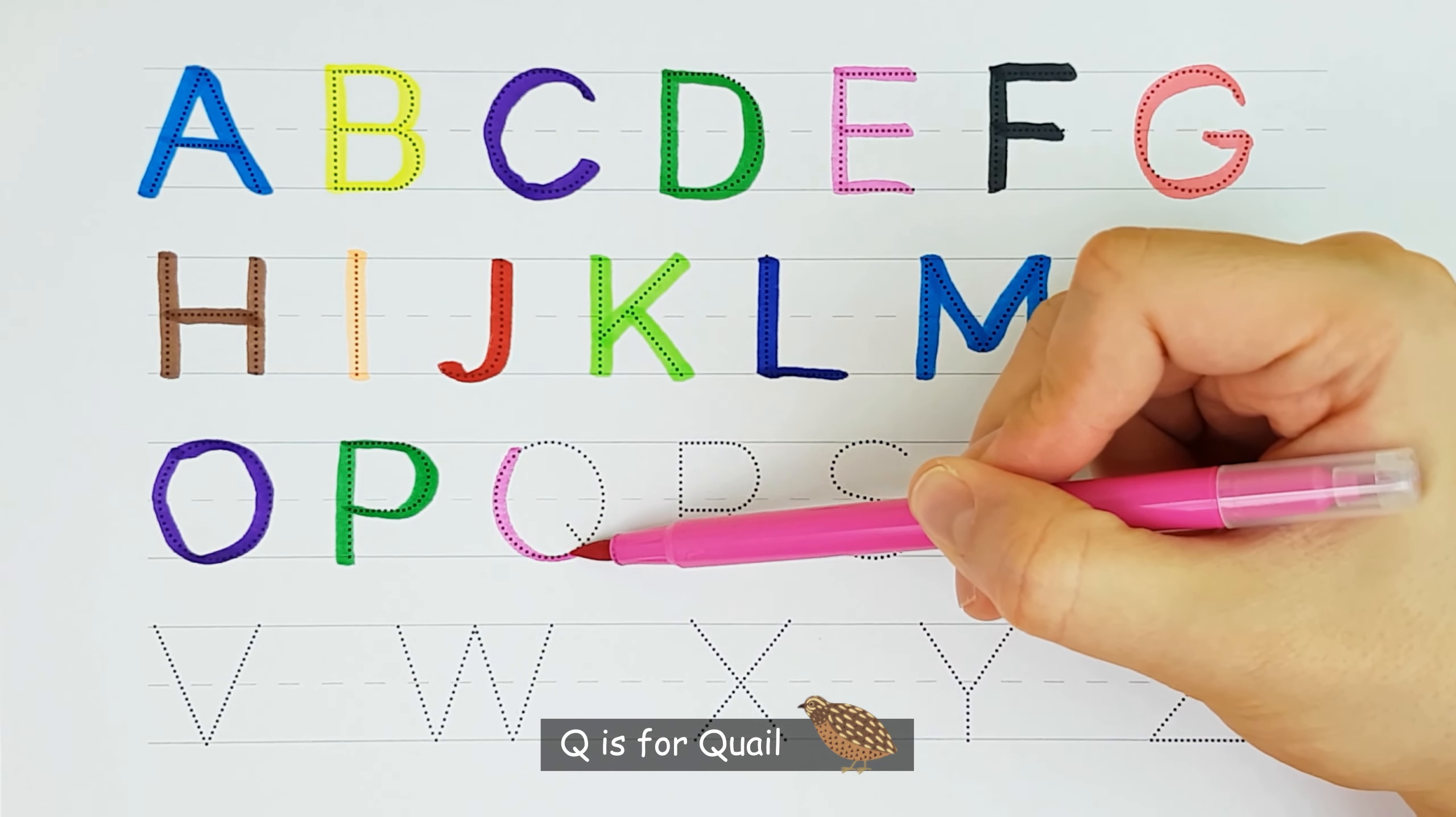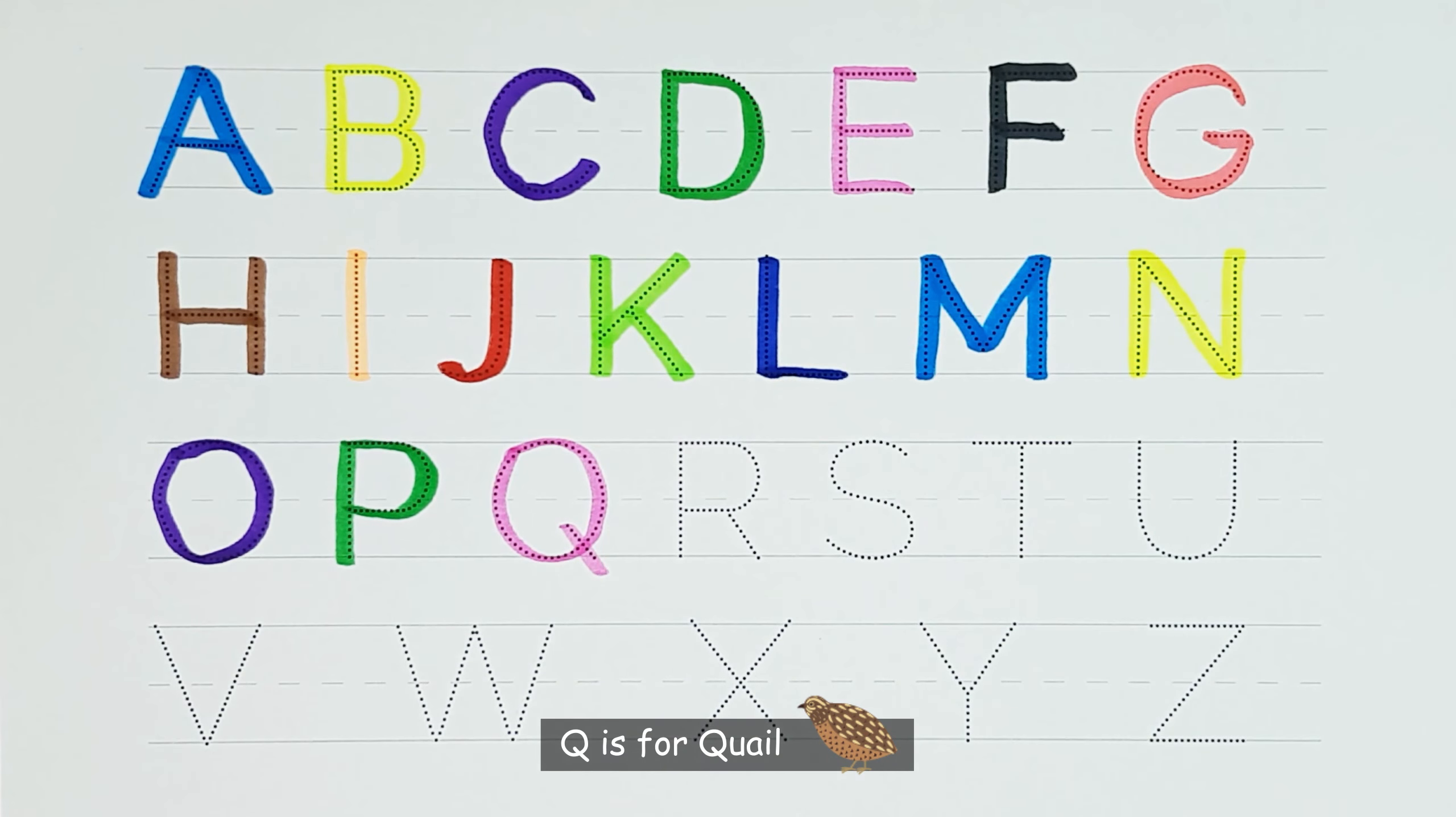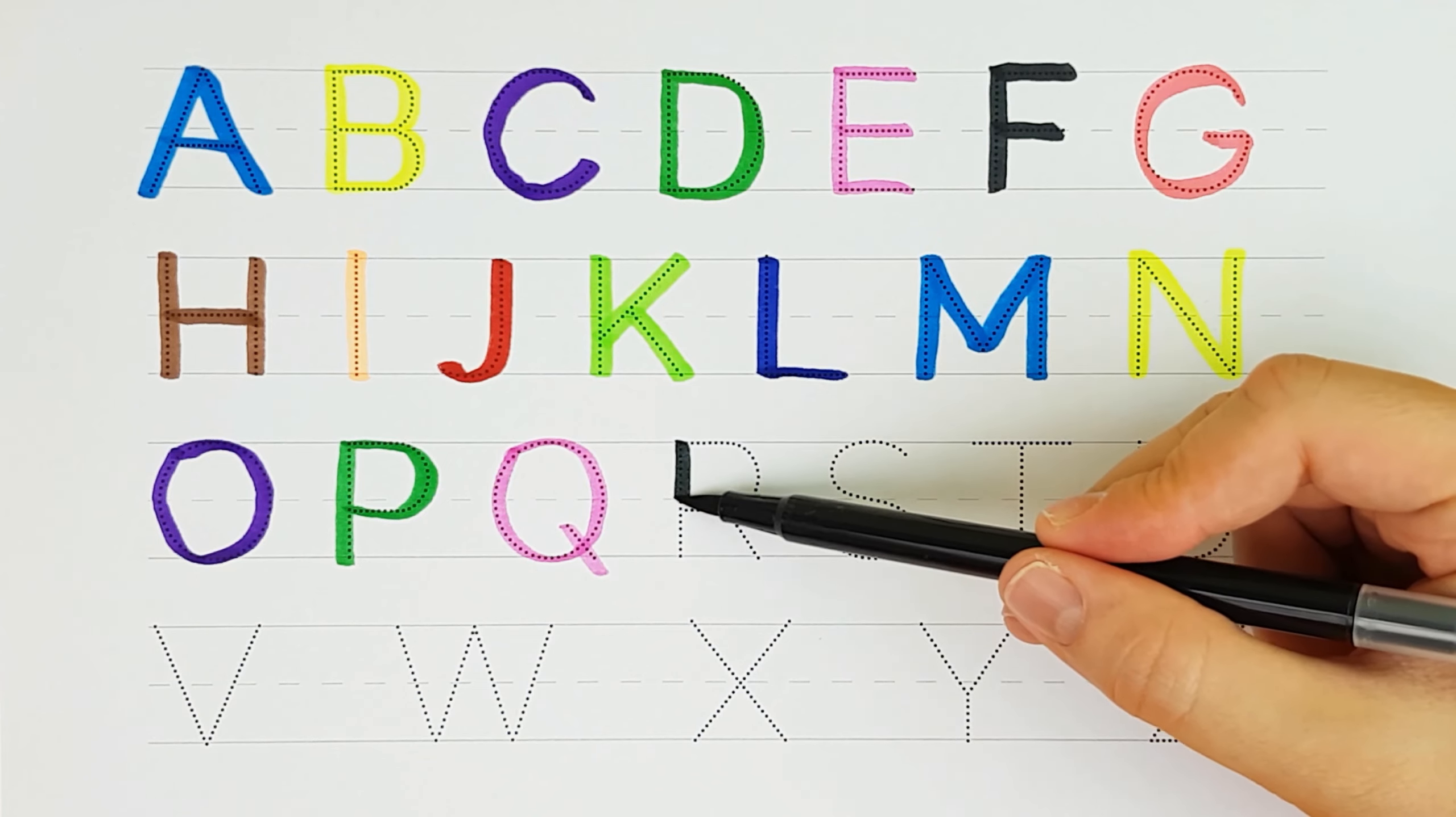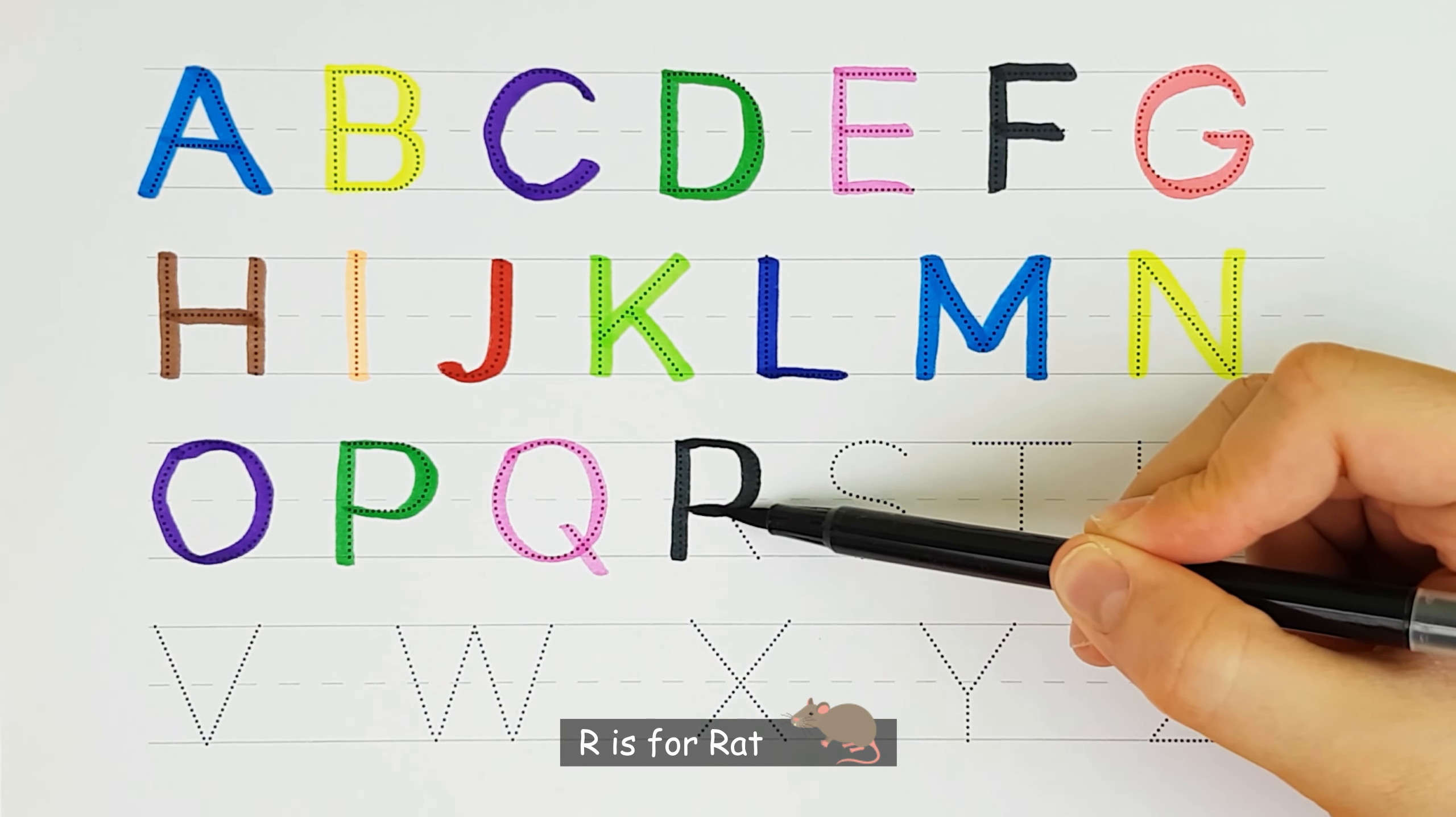Q. Q is for quail. Q. R. R is for rat. R.